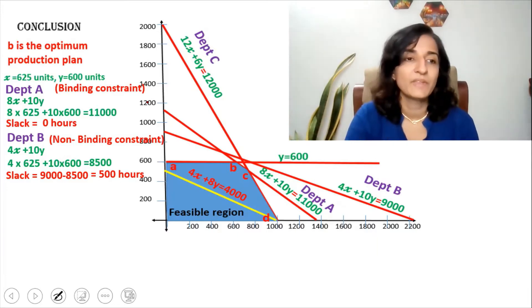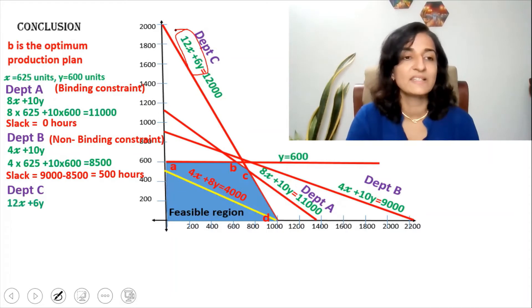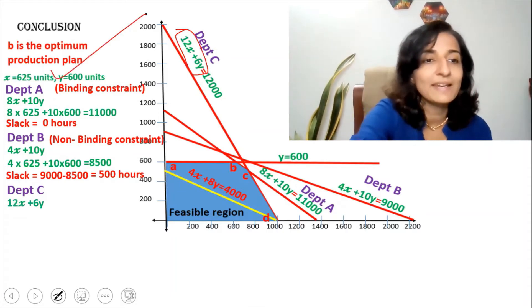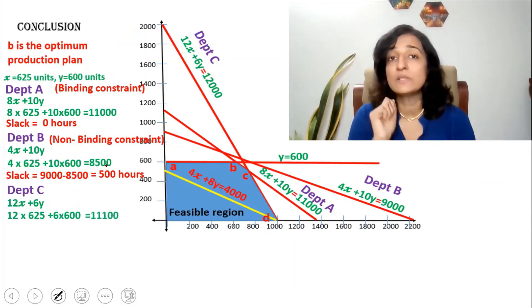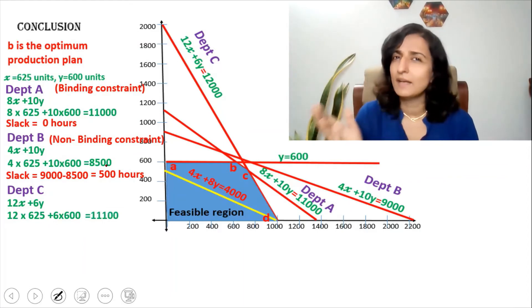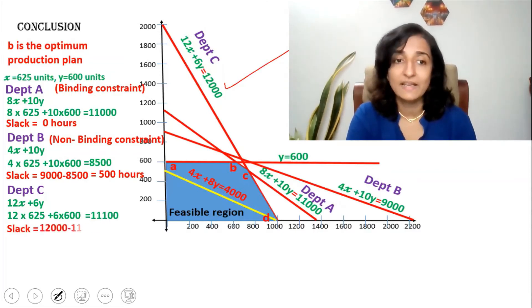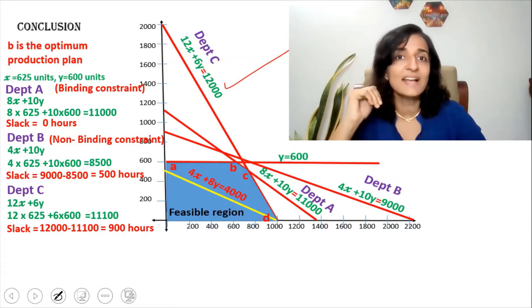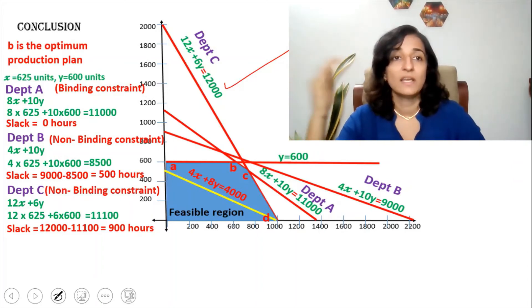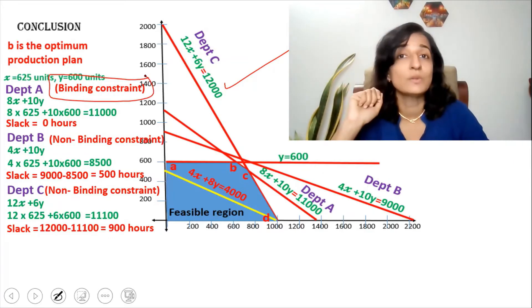Now for department C, the equation is 12x plus 6y. Substituting X=625 and Y=600: 12 into 625 plus 6 into 600 gives 11,100 hours taken. Available hours in department C are 12,000. So slack is 12,000 minus 11,100 = 900 hours. Since there is slack, department C is also a non-binding constraint. The most critical department is department A, because there is no slack — no unutilized resource there.